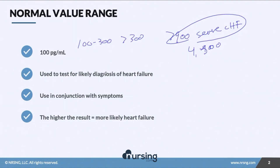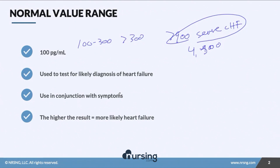BNP is used to test the likely diagnosis of heart failure. When we see these elevated levels, we're saying it's really likely that this patient has heart failure, but we want to make sure we're checking other symptoms as well. We're looking for other tests — doing X-rays and things like that — but BNP gives us the likely diagnosis of heart failure.